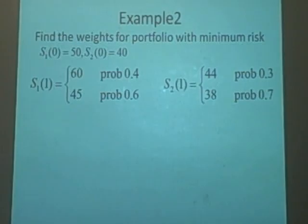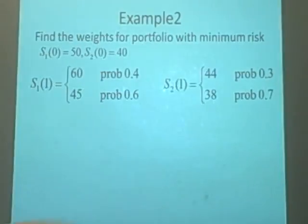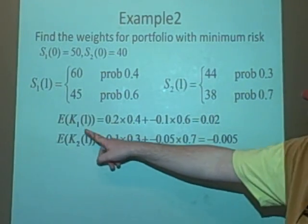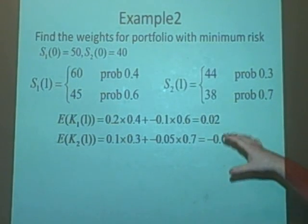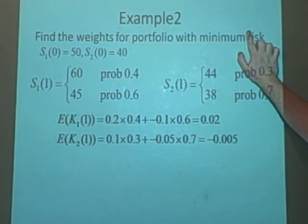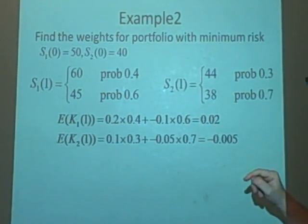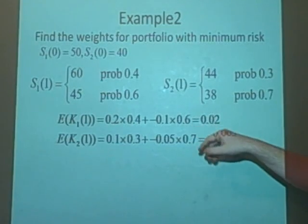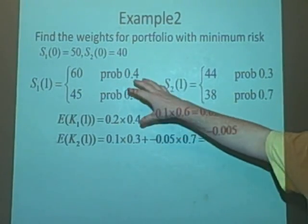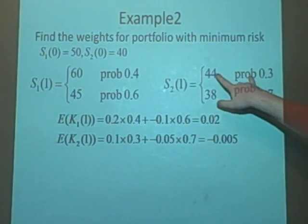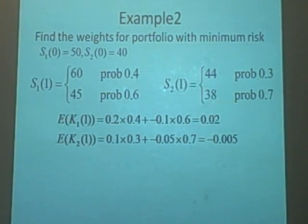Now we just need to find the standard deviation, so first we need the expectation, expected return for each of the stocks. So we've got K_1 and K_2. If you can't remember how to calculate this then there'll be a link there which gives us the value 0.02 and for the second one minus 0.005. We can see this is about right. We go up 10 here, down 5 here, about the same, so it's quite close to zero. Here we've got a bigger chance of going down but again you're going to make twice as much if you go up, so that's going down a little bit.